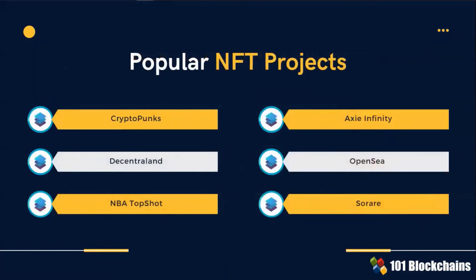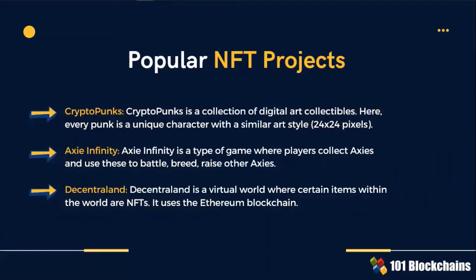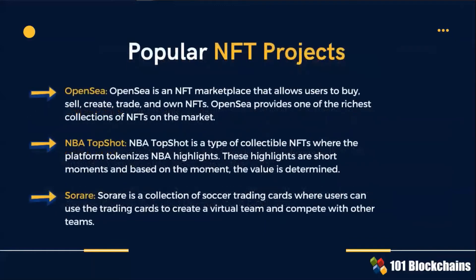Listed in this slide are the most popular projects that use an NFT as the foundational element of value. CryptoPunks is a collection of digital art collectibles where every punk is a unique character with a similar art style. Axie Infinity is a type of game where players collect Axies and use these to battle, breed, and raise other Axies. Decentraland is a virtual world where certain items within the world are NFTs. OpenSea is an NFT marketplace that allows users to buy, sell, create, trade, and own NFTs, providing one of the richest collections of NFTs on the market. NBA Top Shot tokenizes NBA highlights — short moments whose value is determined by the moment itself. Sorare is a collection of soccer trading cards where users can use the trading cards to create a virtual team and compete with other teams.